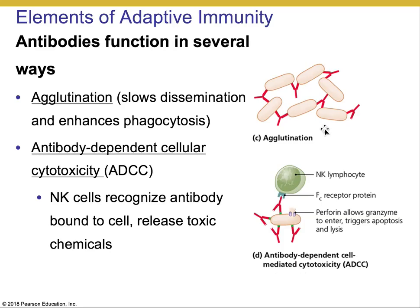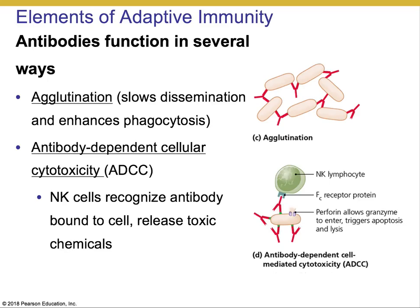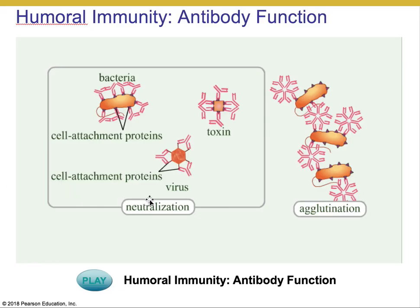The last mechanism is antibody-dependent cellular cytotoxicity, abbreviated ADCC. The way this works is that an antibody, once bound to some organism — possibly something too large to phagocytose — a natural killer lymphocyte, which also has an FC receptor protein, will recognize that the antibody is bound to a target organism and then releases perforin and granzymes that result in the death of the target cell. So there are many different ways in which antibodies can help enhance immune function.